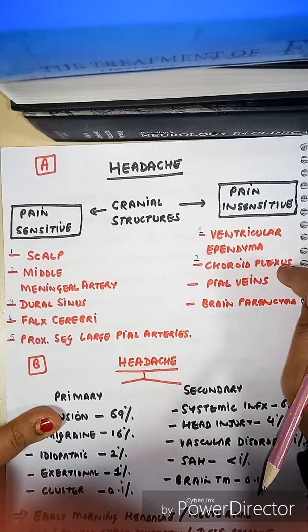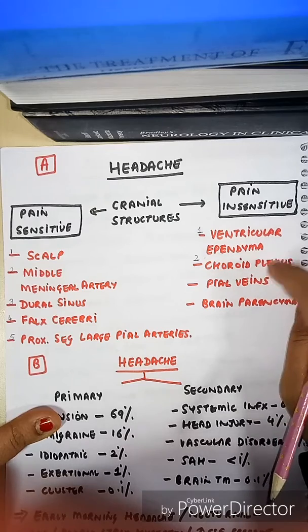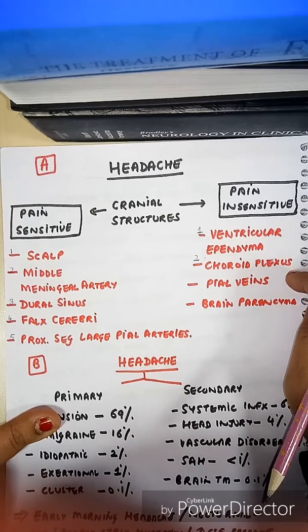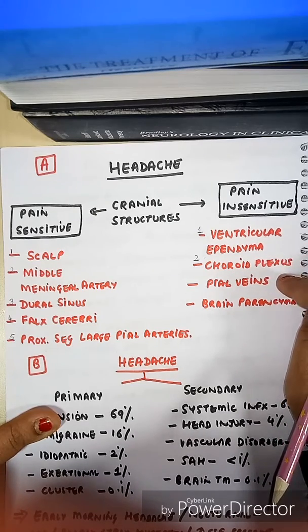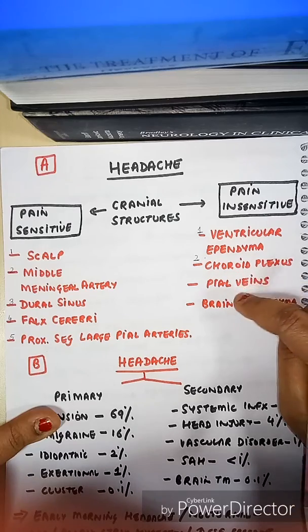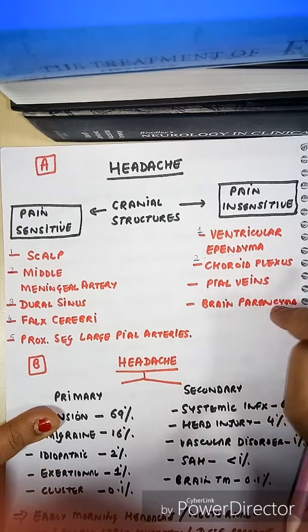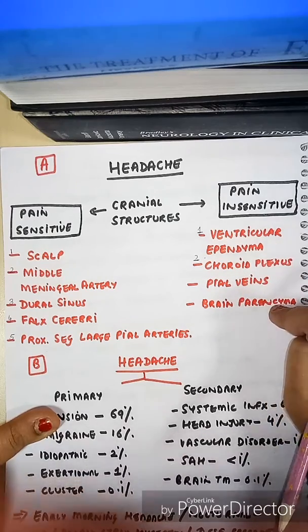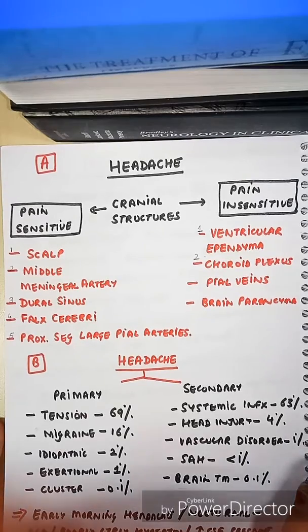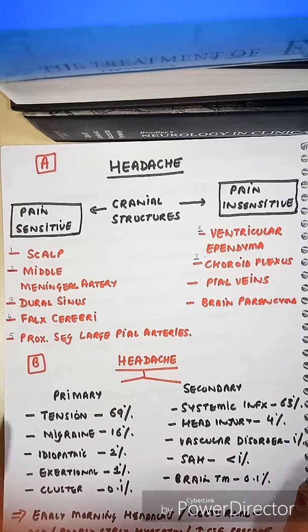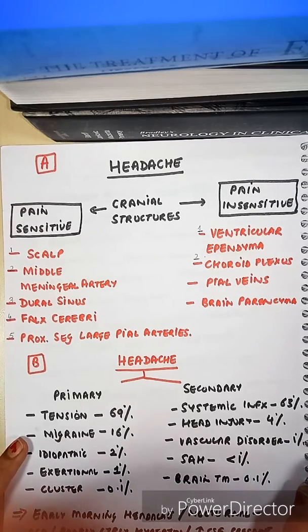What are the pain-insensitive structures? Remember these two: ventricular ependyma and choroid plexus — these are pain insensitive. Also pain insensitive are pial veins and brain parenchyma.